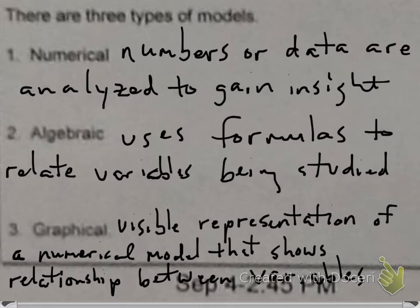There are three types, and you can see the definitions here. A numerical model is just what it says — it uses numbers or data to gain insight into a situation, whether costs increase or decrease. An algebraic model uses formulas; given certain information, you would create an equation to relate variables being studied. A graphical model takes the numerical model — those numbers, that data — and puts it into a graph. Honors Algebra 2 kids, if you remember last year when we did L1 and L2, where we put data for one variable in one column and another variable in another, and we got a scatter plot — this is what they're talking about: taking these points, putting them on a graph, and making conclusions based on that.